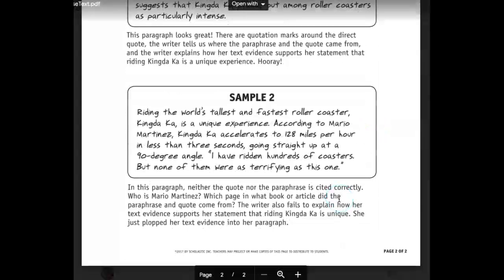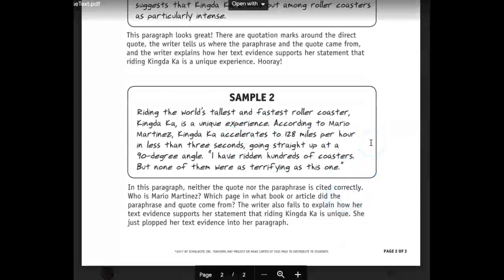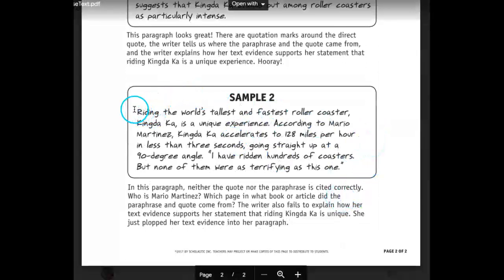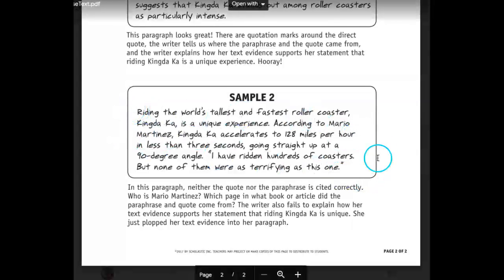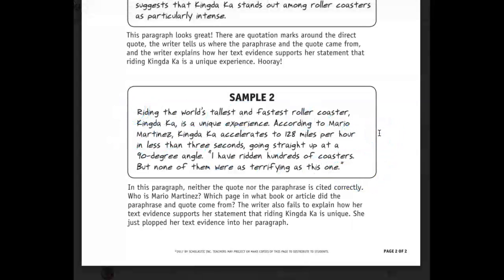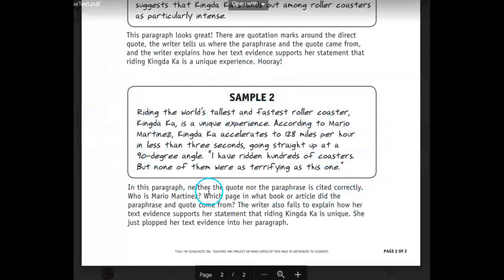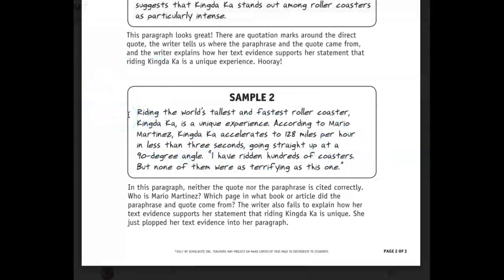There are two paragraphs and I want to show you the second one. Follow along as I read this to you. As we look at this paragraph, we're going to look at how evidence is cited and whether the author has done a sufficient — a good enough — job at explaining their evidence.